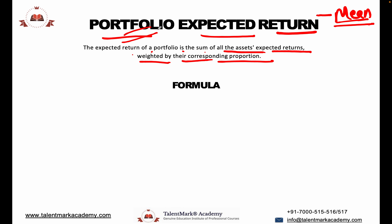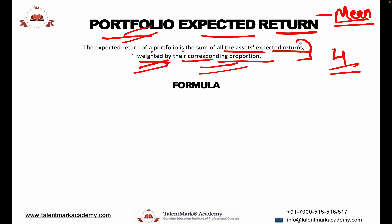What is a portfolio and how many assets do we have? We have four assets with their expected returns — that is, their means. We multiply each by its corresponding proportion, or weight. So this is a weighted average mean.